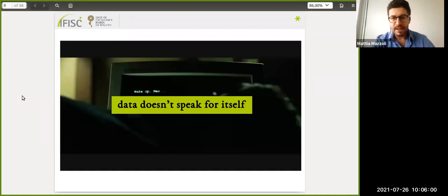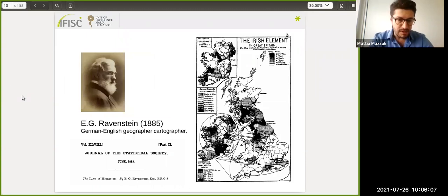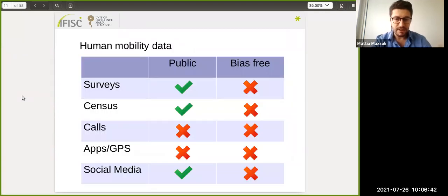The first thing to say is that data doesn't speak for itself. The first to notice this was Ravenstein in 1885. Ravenstein was a German-English geographer who studied the UK census from one decade to the other. Ravenstein noticed that death and birth records did not completely explain population changes in different areas. His interpretation was that there was an underlying process, mainly migration from peripheral areas toward economically wealthier areas like London, Birmingham, and Manchester in England.